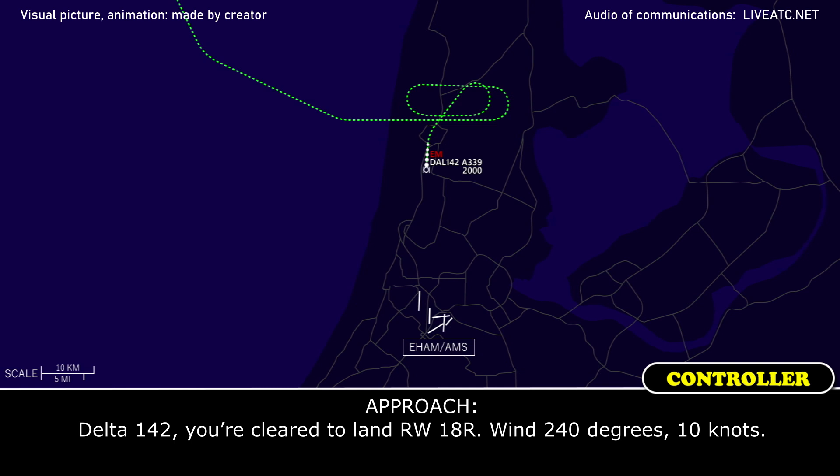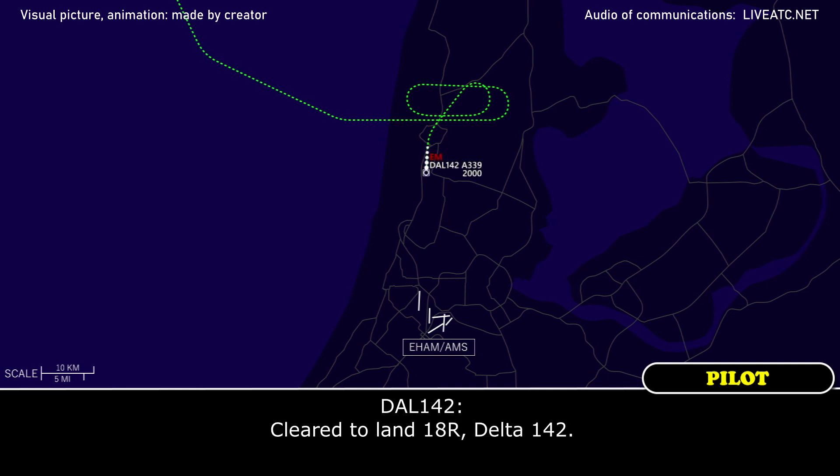Delta 142, you are cleared to land runway 18R. Wind 240 degrees at 10. Clear to land 18R, Delta 142.